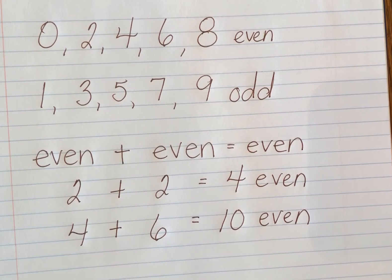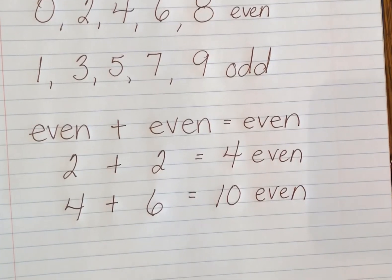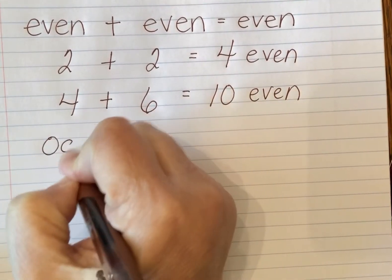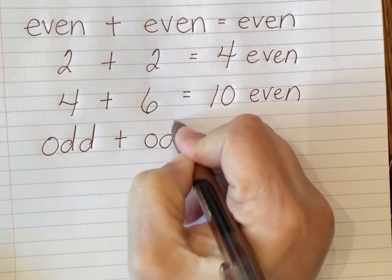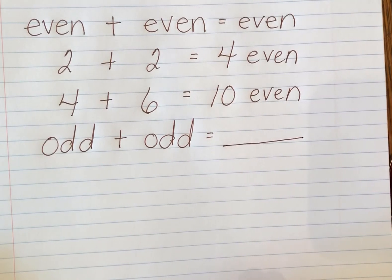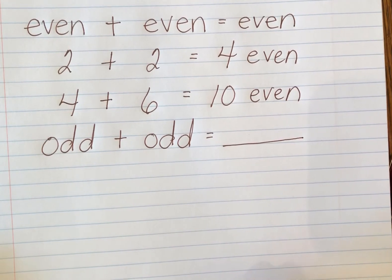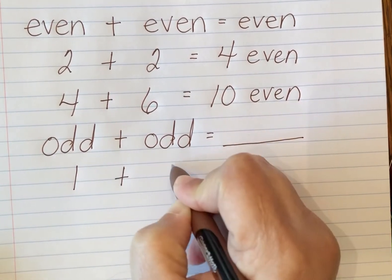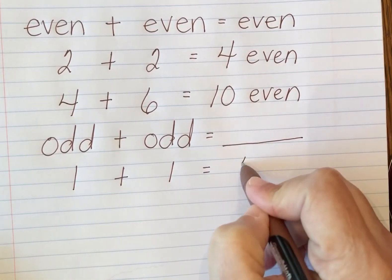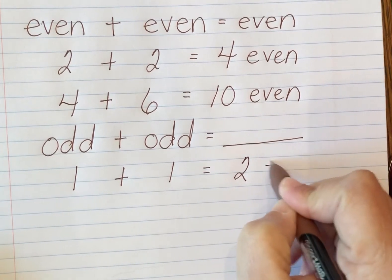Let's try this again. This time we're going to look at odd plus odd. I'm going to take an odd number and add it to another odd number and see what we get. Odd numbers have a one, three, five, seven, or nine in the ones place. I'll keep it simple and say one plus one. One is odd, one is odd, and when I add them together I get two — two is an even number.